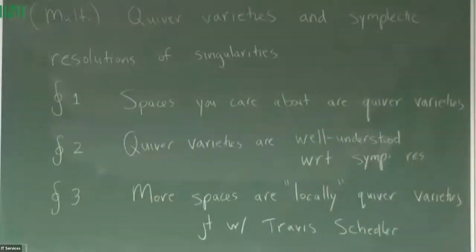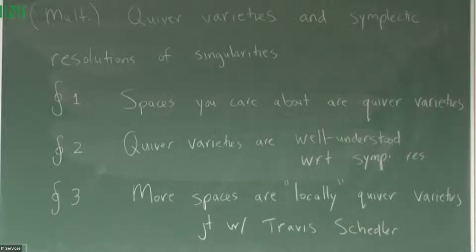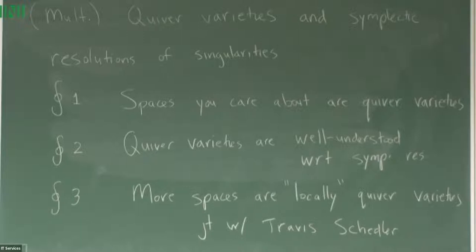The third part of the talk is some joint work with Travis Schedler pre-pandemic, and also joint work in progress. The older idea was that we noticed some spaces could be locally realized as quiver varieties. This is a lot less obvious what it buys you, but at least locally in a neighborhood you understand what some local resolution is. The work in progress is taking this system of local resolutions and gluing them together to find some way of building a global resolution. We have some obstruction theory — there are some failures — but there are nice easy cases where you can already say something interesting.